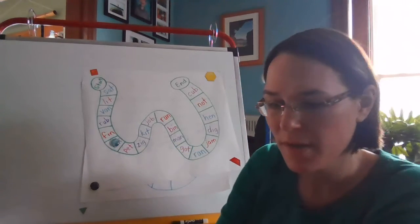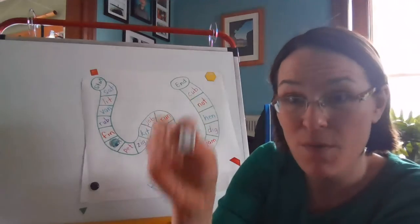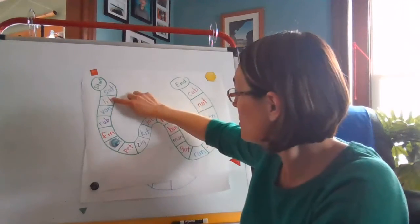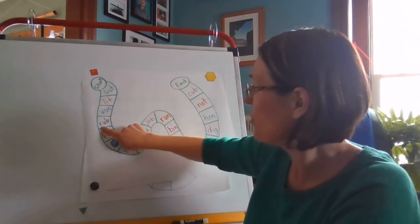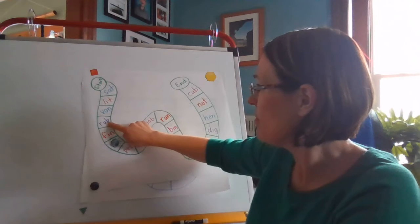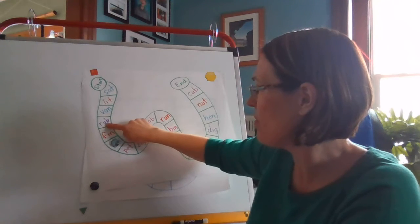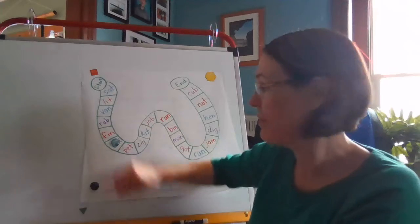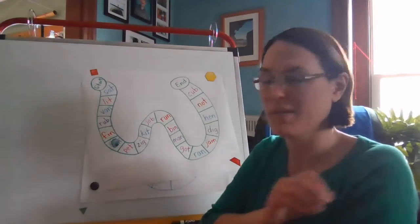Now it's your partner's turn. Oh they got a four. One, two, three, four. Rub. Rub. I rubbed my elbow because I bonked it and it hurt.